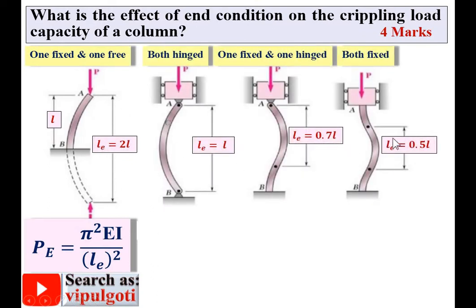There are four different end conditions. Case one: one end is fixed and one end of the column is free. Case two: both ends hinged — here you can see end one of the column is hinged and end two of the column is also hinged. Case three: one end fixed and one end hinged.